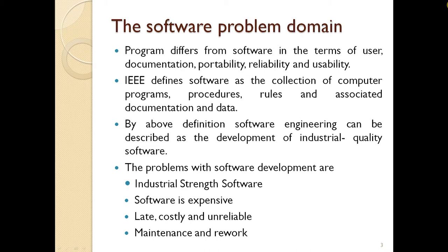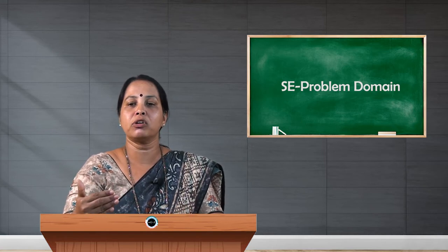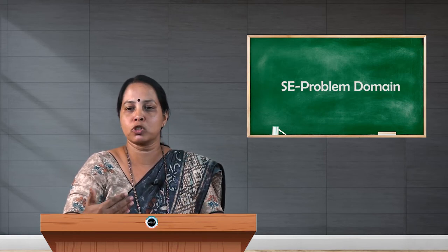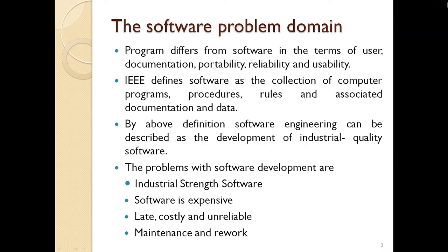IEEE — the Institute for Electrical and Electronics Engineering — defines software as a collection of computer programs, procedures, rules, and associated documentation and data. By this definition, software engineering can be described as the development of industrial quality software. The software developed by an organization to computerize or automate a particular application is called industrial quality software. Industrial quality software is completely different from a student project and there are key differences between the two. What we are going to see in this session are the actual problems faced by industrial strength or industrial quality software.